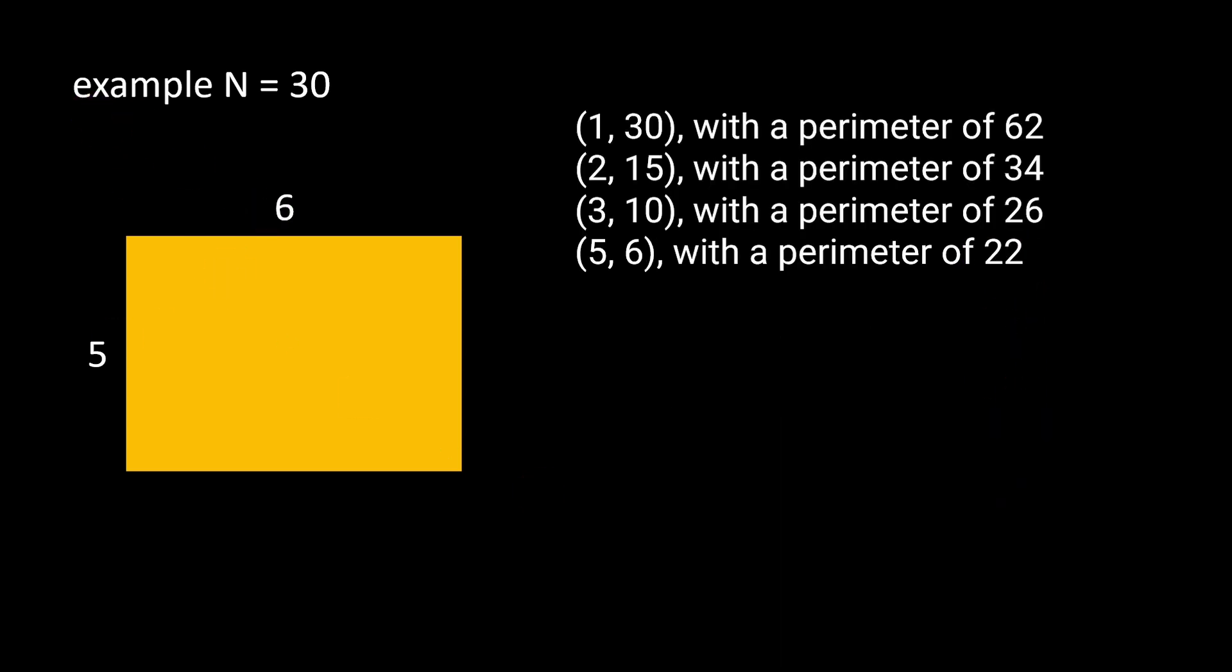Of course we can start a brute force approach in the sense that we will iterate over the first width, for example equal to 1, then A equal to 2, then 3, then 4, and so on. For each iteration we can check if 30 or N modulus A is equal to 0, in which case 30 is divided as an integer by the value of A, yielding another integer which is the other dimension of the rectangle.